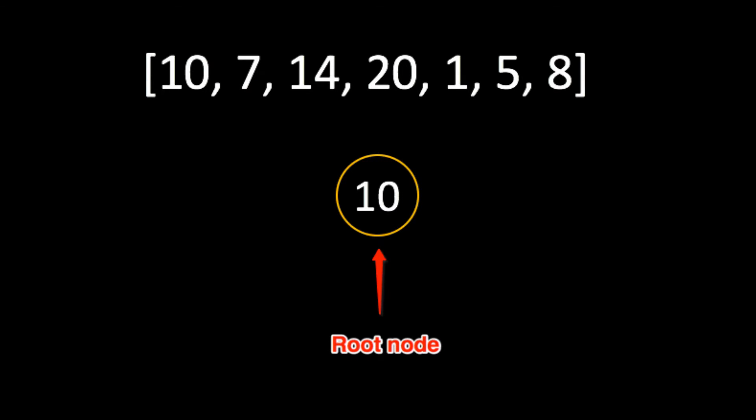Here is the array that we'll be using in this tutorial. This is a basic integer array consisting of seven values that are in unsorted order. The first value in the array is 10. So the first step in constructing the tree will be to make 10 the root node, as shown here.